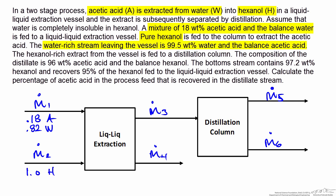The water-rich stream leaving the extraction column is 99.5 weight percent water. Keep in mind it's the acetic acid and hexanol going to the distillation column, so this is stream m4. In this stream the mass fraction of water is 0.995, and since hexanol and water don't mix, the mass fraction of acetic acid must be 0.005 so that the mass fractions sum to 1.